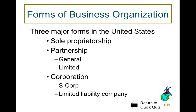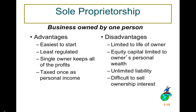A sole proprietorship is a business owned by one person. The advantages are it's easy to start, it's not very regulated, there's a single owner who keeps all the profits, and it's taxed once as personal income. The disadvantages are it's limited to the life of the owner — if you pass away, so does the business — the equity capital is limited to the owner's personal wealth, there's unlimited liability, and it's difficult to sell or transfer ownership interest.